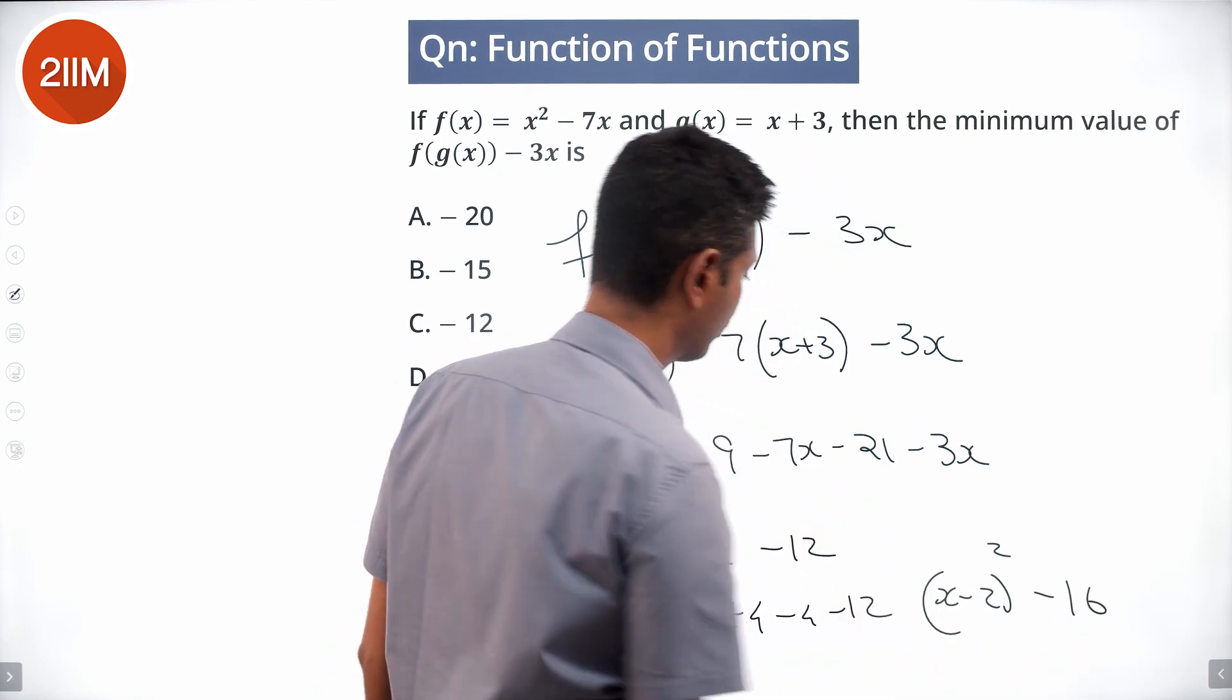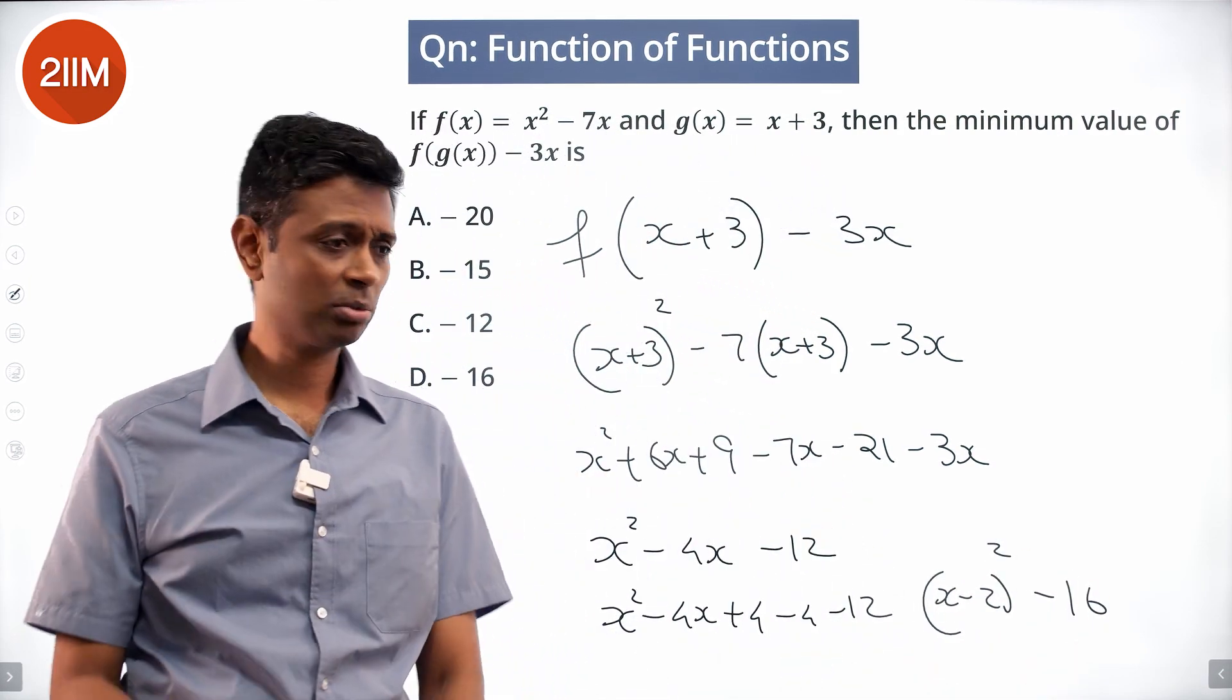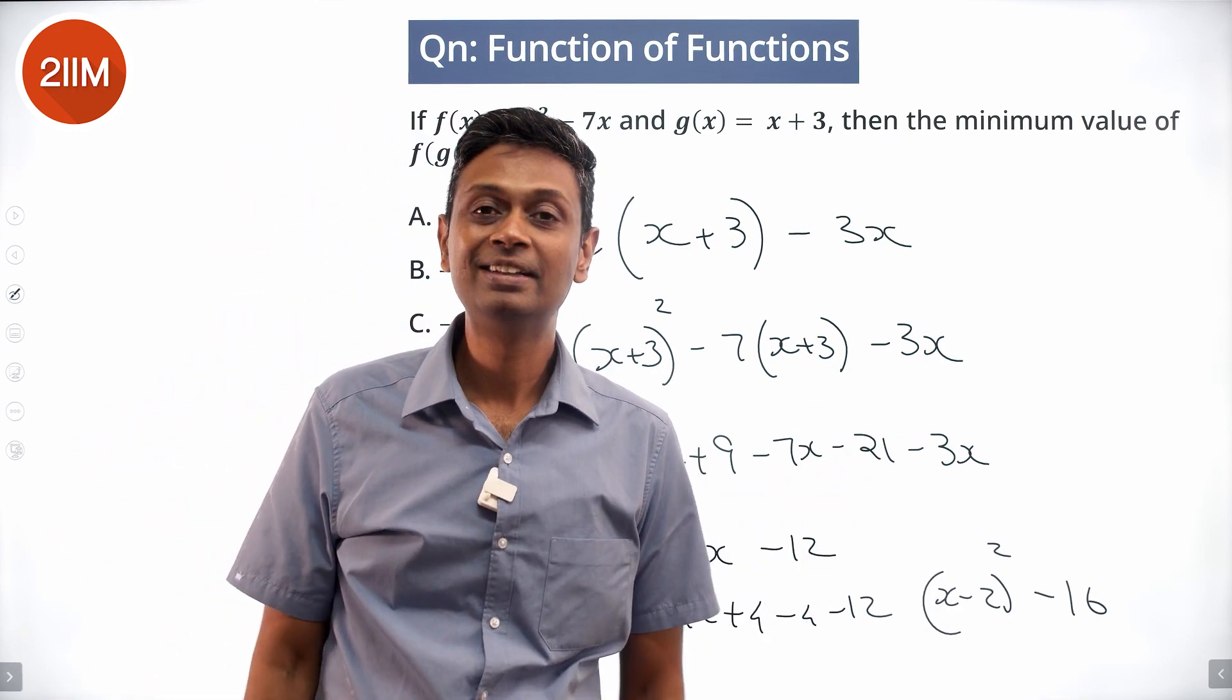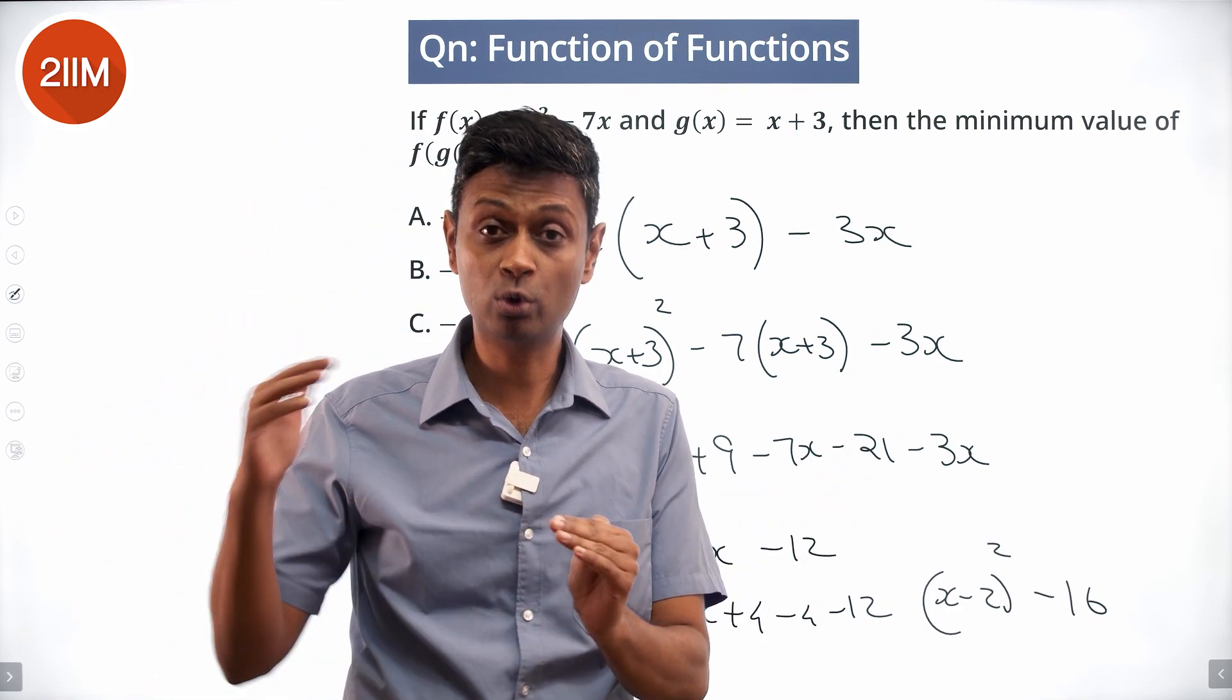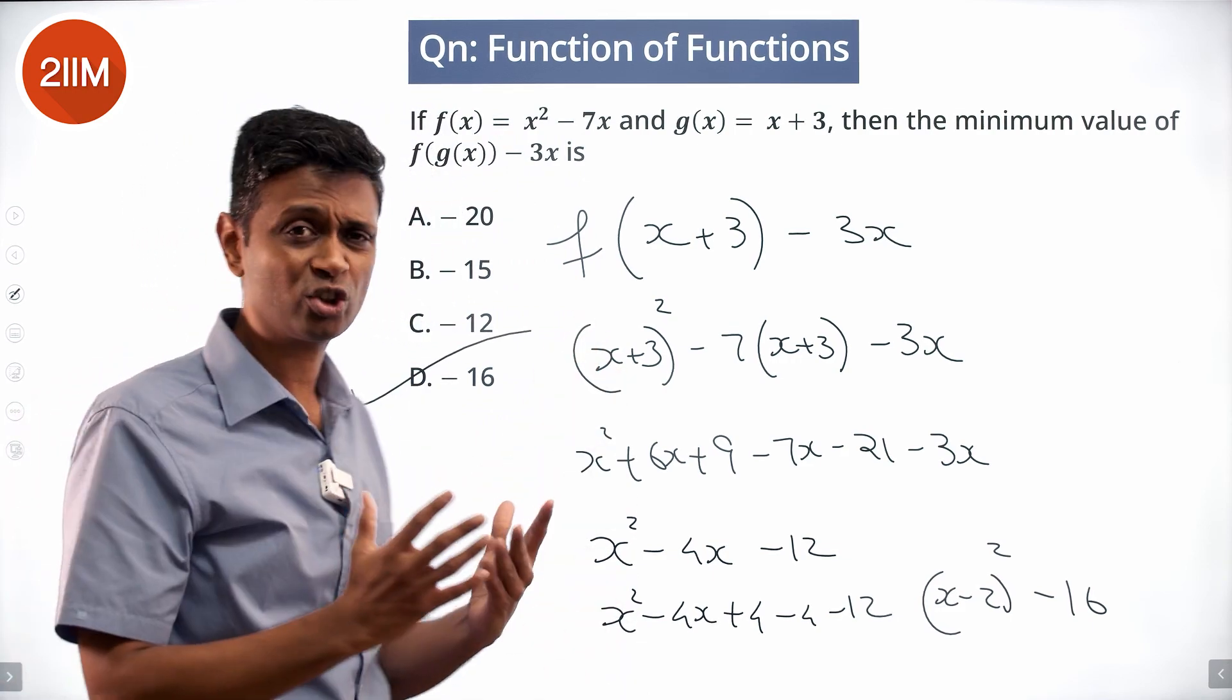squared minus 16. We want to find the minimum possible value of x minus 2 whole squared minus 16. That can happen when x minus 2 whole squared goes to 0. The value will be minus 16. Complete the square, think of it as a square plus the balancing term.